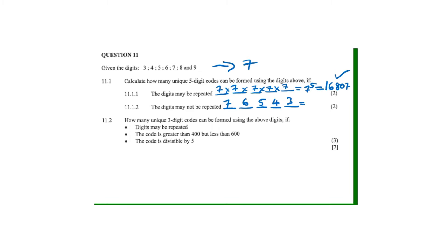We multiply: seven times six times five times four times three, which equals two thousand five hundred and twenty different codes.